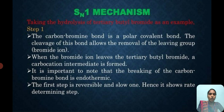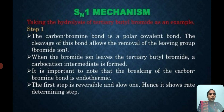When the bromide ion leaves the tertiary butyl bromide, a carbocation intermediate is formed. It is important to note that the breaking of the carbon-bromine bond is an endothermic process. The first step is reversible and slow.